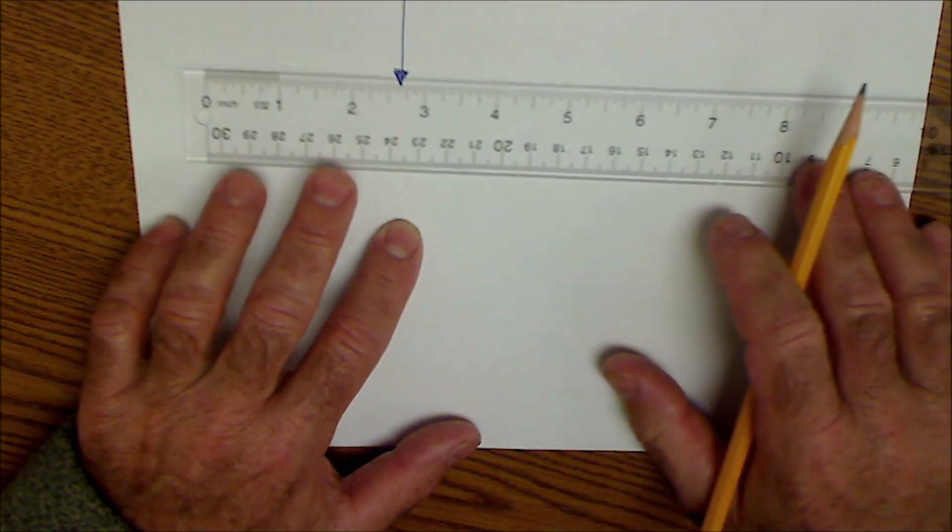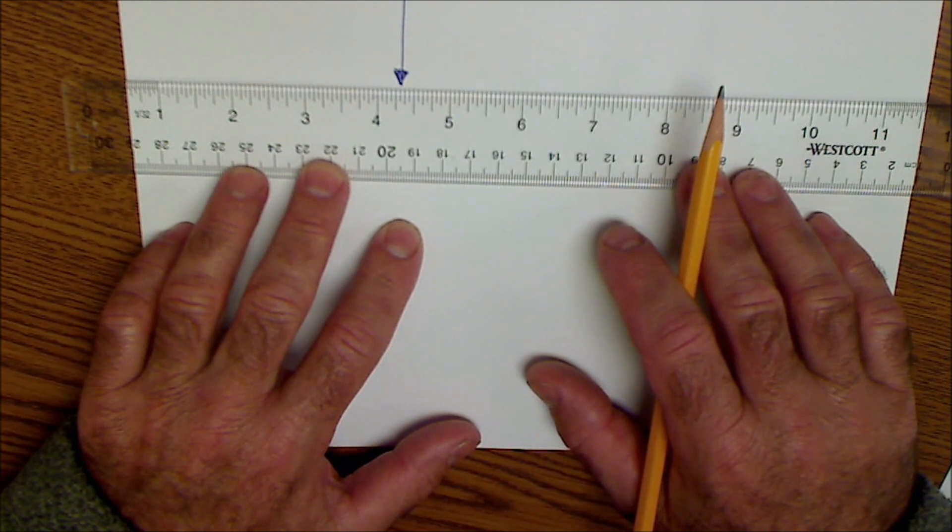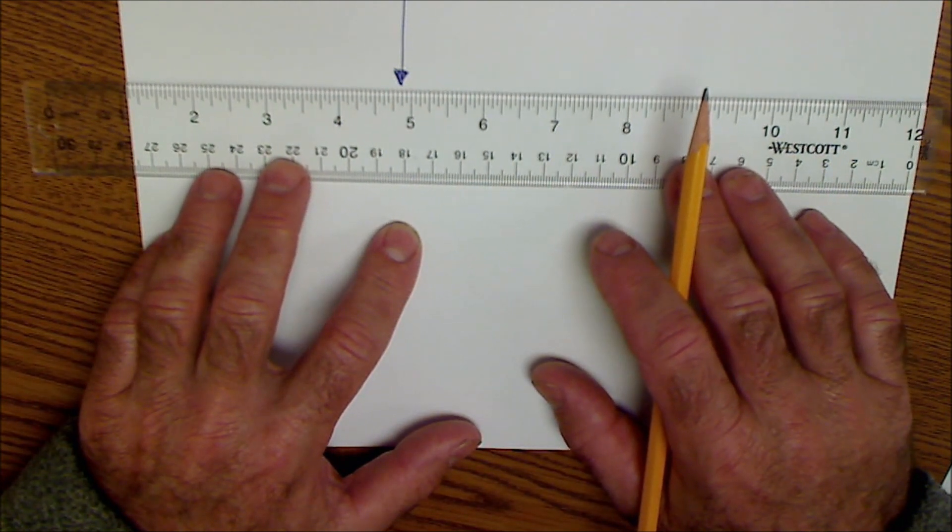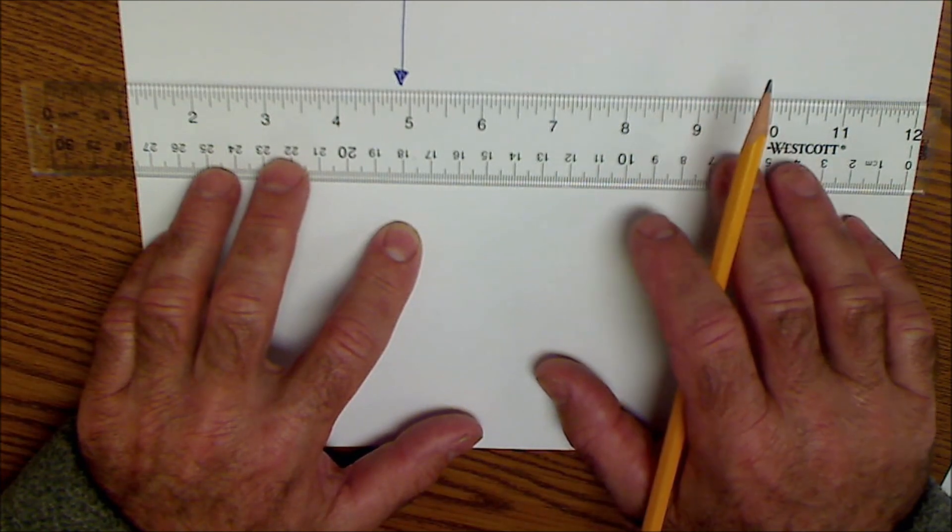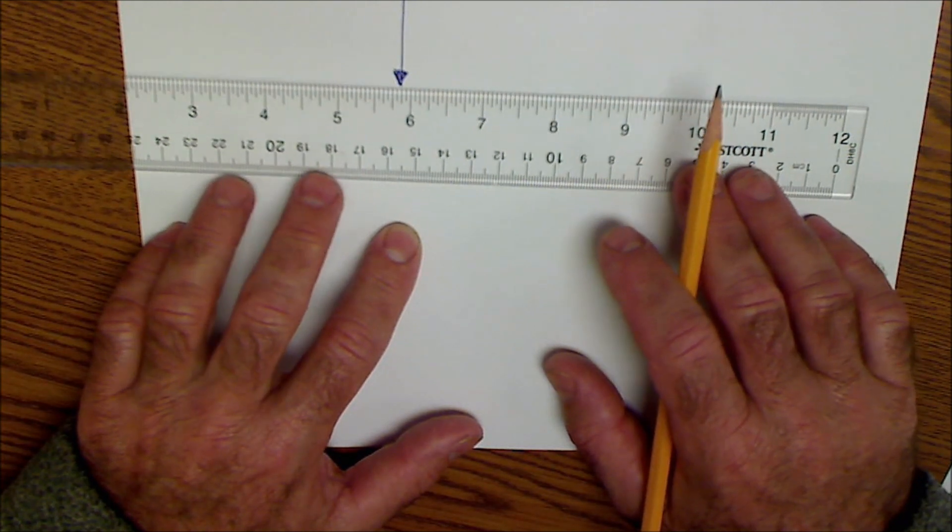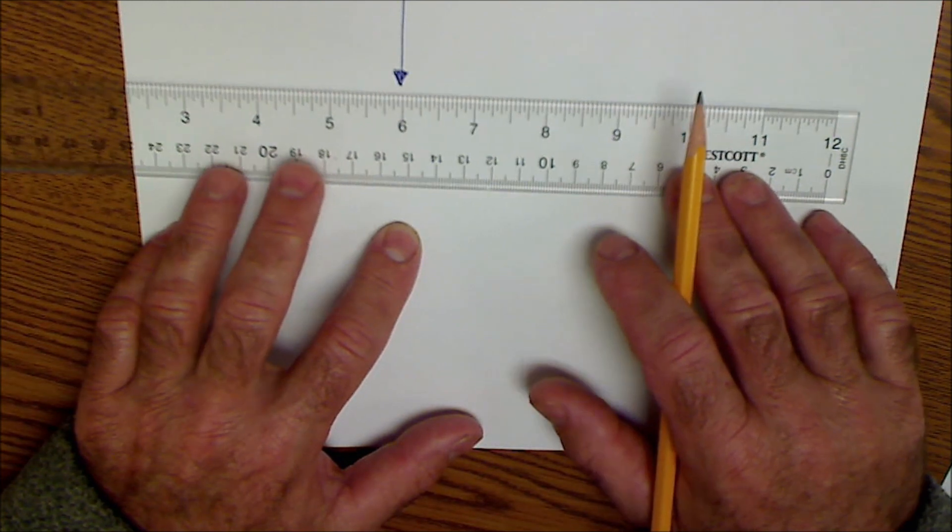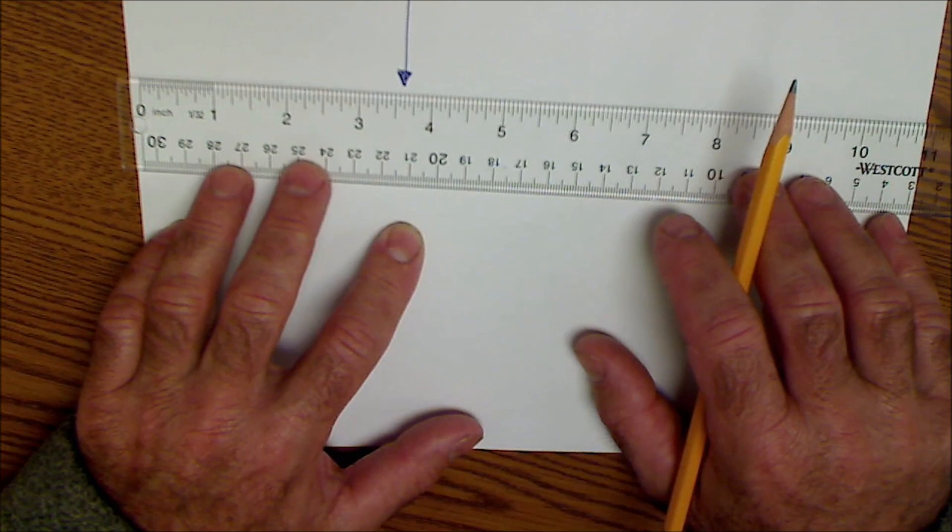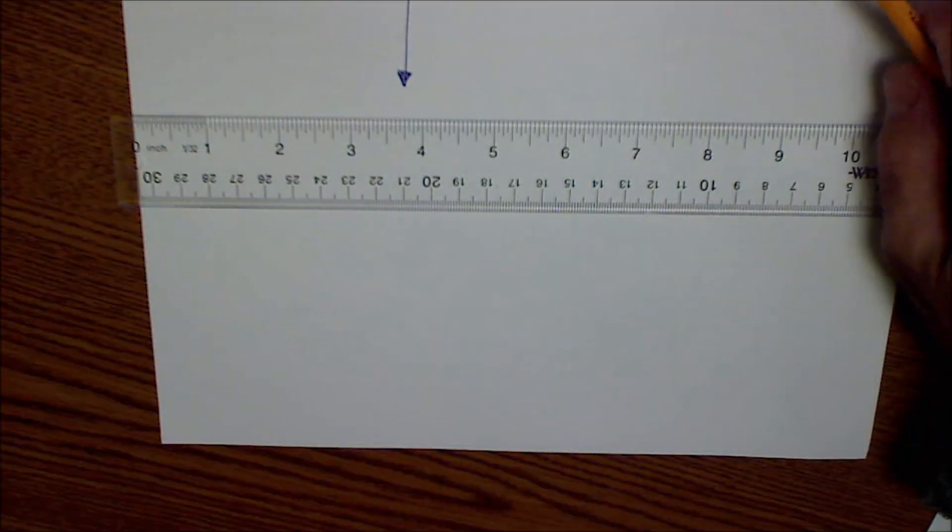Try a couple more here. Four and five sixteenths. Four and seven eighths. Five and a half. Six and three sixteenths. Three and five eighths. Hopefully you're saying those out loud and getting them right.